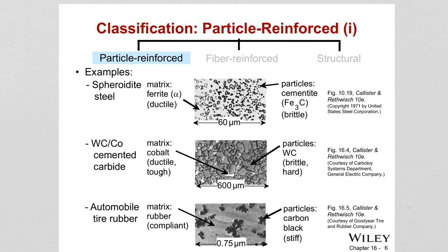Another example is automobile tire rubber: the matrix is rubber and the particles are carbon black. Rubber is actually whitish — have you questioned why car tires are black even though they are made of rubber? The reason is that carbon black is added as a reinforcing filler in rubber products, especially tires, to improve tensile and compressive strength, toughness, and thermal stability.